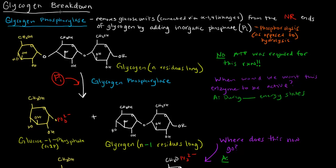The way it breaks down glycogen is it removes a single glucose unit at a time that's connected via an alpha-1,4 linkage, and it removes it from the non-reducing ends of glycogen by adding an inorganic phosphate. So this process is called phosphorolysis, we're going to add a phosphate group to break a bond.